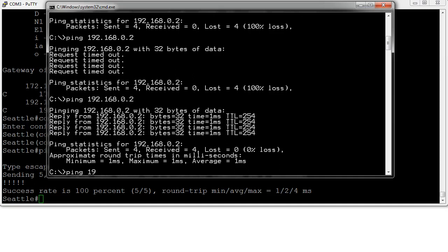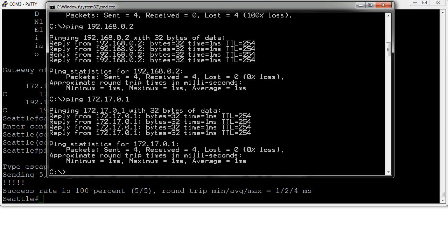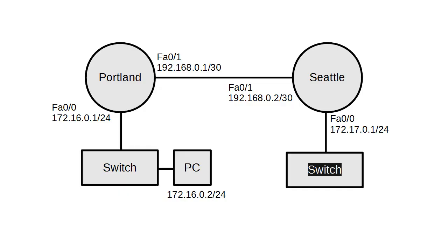If I try pinging all the way across to 172.17.0.1, it gets all the way over to the other interface of the Seattle router. The Seattle router then knows how to get the response back. If I were to add a PC to the other side connected to the switch next to the Seattle router, I'd be able to send a ping all the way there, but that PC would also need its default gateway set to the Seattle router to get data back.